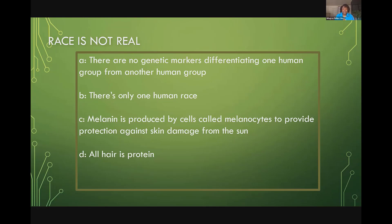There's only one human race. Melanin is produced in the cells to protect us against sun damage, so people whose tribes developed in warm or hot climates will have darker skin to protect them from the sun. All hair is protein — it doesn't matter whether it's straight, wavy, curly, or kinky hair, it's all protein. What makes the difference in hair texture is the follicle, the little hole the hair comes out through.